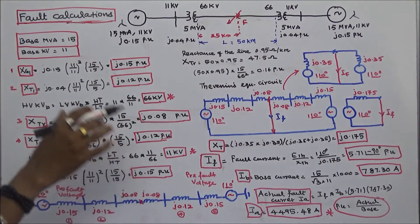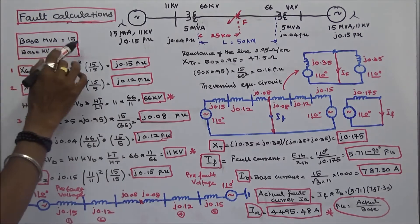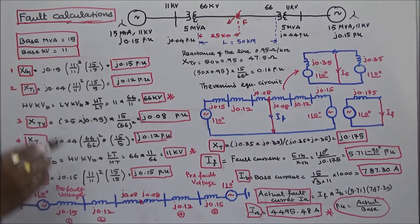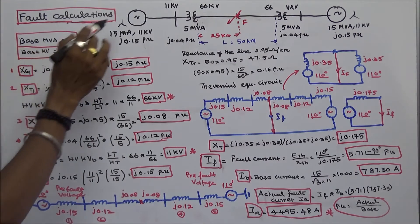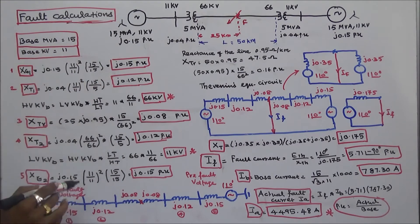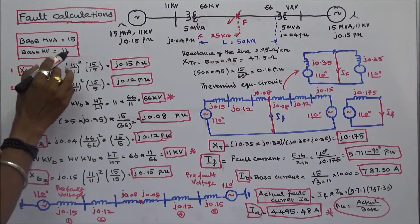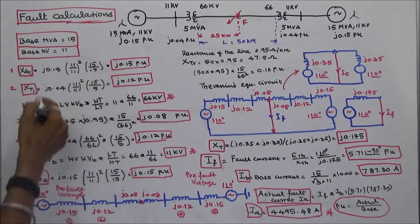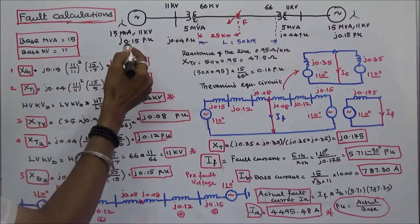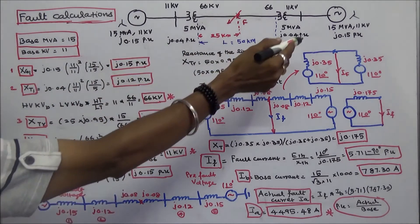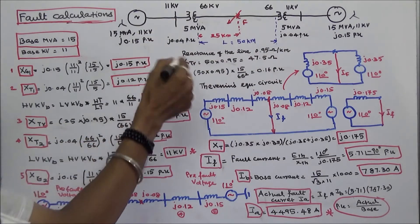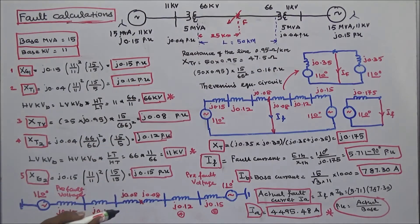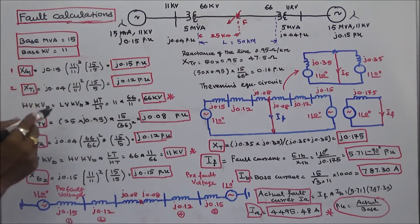The first step is to choose the base MVA and base KV. Base MVA is equal to 15. Base KV is equal to 11. Next, we calculate the per-unit reactance values of all components with respect to this base MVA and base KV.